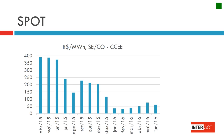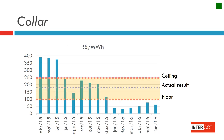The spot prices are very volatile. One may lock prices at the spot, which means that every month there will be a new price according to the value published by the local clearinghouse CCEE. It may vary from 388 reais per megawatt-hour to 30 reais per megawatt-hour.